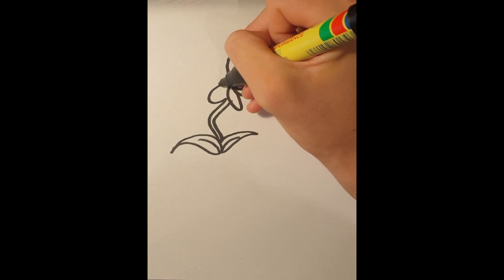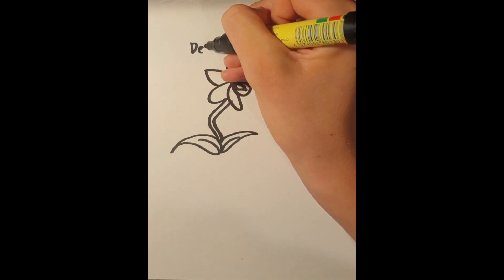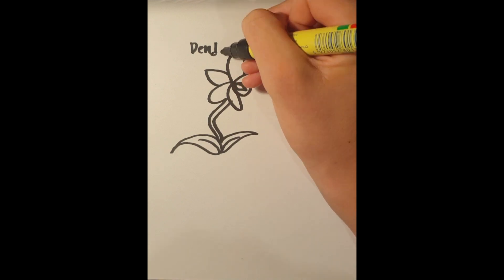The species of orchid, Dendrobium bigibbum, commonly known as the Cooktown Orchid, was first described by John Lindley in 1852.